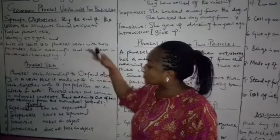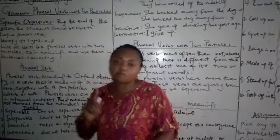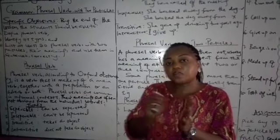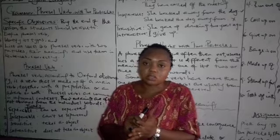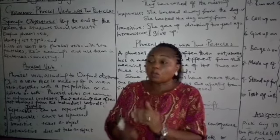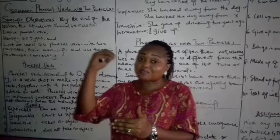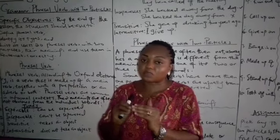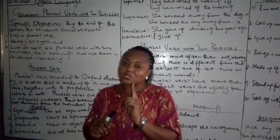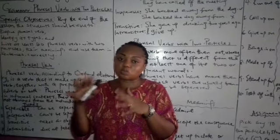What is a phrasal verb? A phrasal verb consists number one of a verb. It must start with a verb. A verb plus a preposition or a verb plus an adverb, or a preposition plus an adverb making up a phrasal verb. Remember, it must start with a verb. If you don't start with that, then you may confuse it with an idiom or something else.